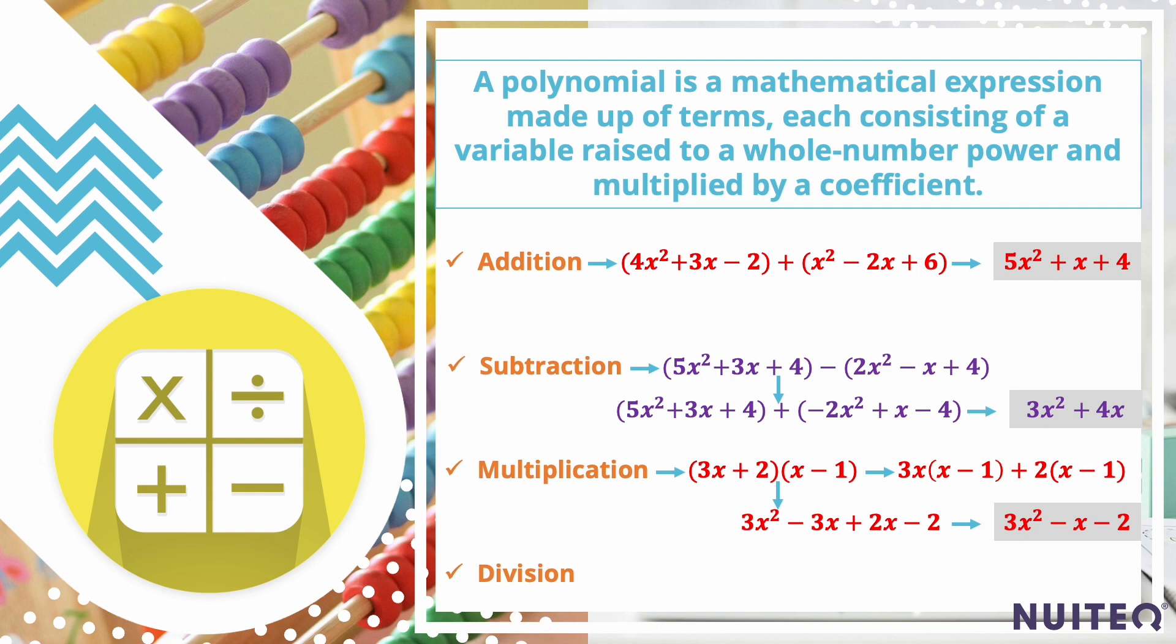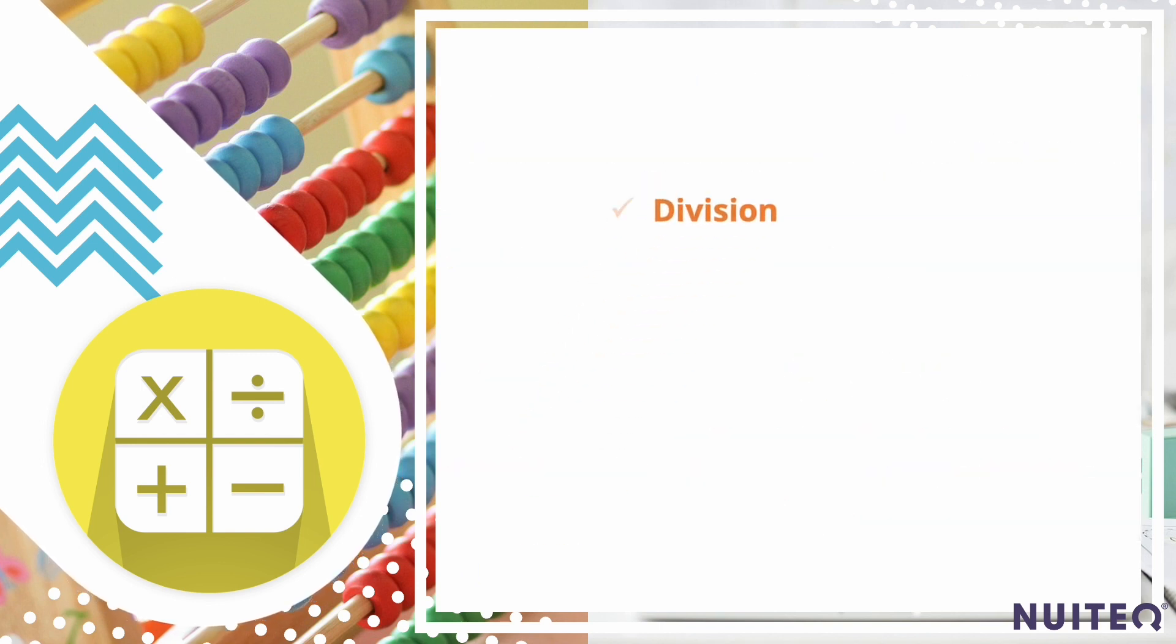Now let's take a moment and analyze division. Division of polynomials can be performed using long division or synthetic division methods. The result is either a polynomial quotient or a quotient with a remainder.